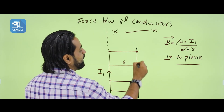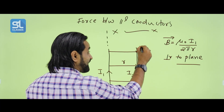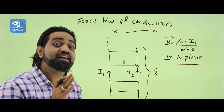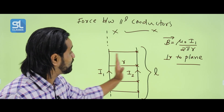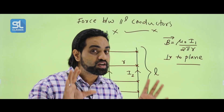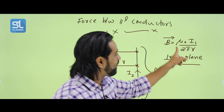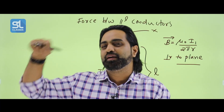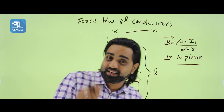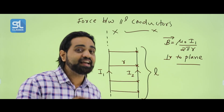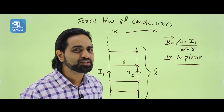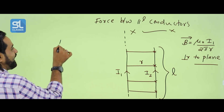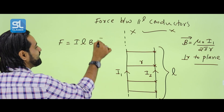A second conductor is placed at that distance R. Current flows through it. The second conductor, with length L, is lying in the magnetic field produced by the first conductor. That's why the force acting on the second conductor is F = ILB sinθ.